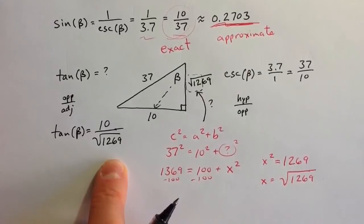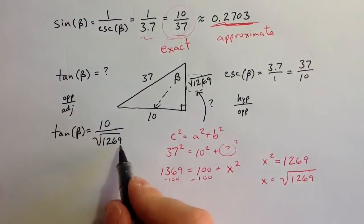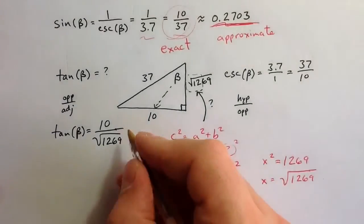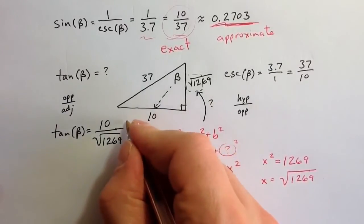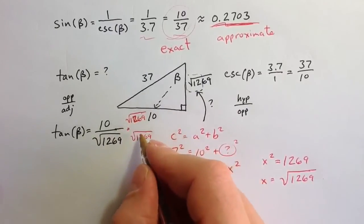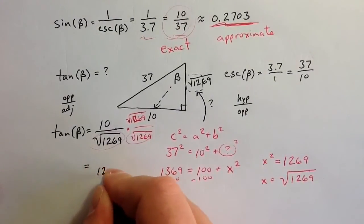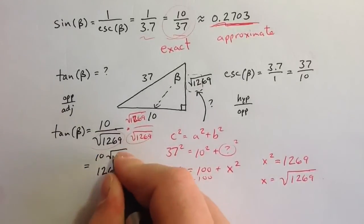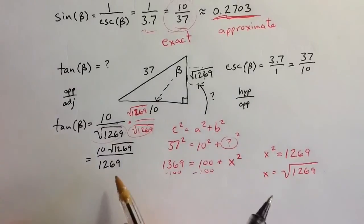Often in mathematics, it's nicer to have a whole number in the denominator rather than a square root, and there are some reasons for getting rid of square roots in the denominator. We can multiply a fraction, a ratio, up top and in the denominator by the same thing. So if I multiply the numerator and the denominator by the square root of 1,269, these square roots combine to just give us 1,269, and up top we would get 10 times the square root of 1,269. Either of these would be exact answers. The 10 times the square root of 1,269 over 1,269 would be a rationalized denominator, which is kind of a nice feature.